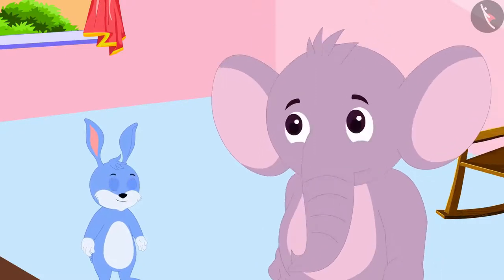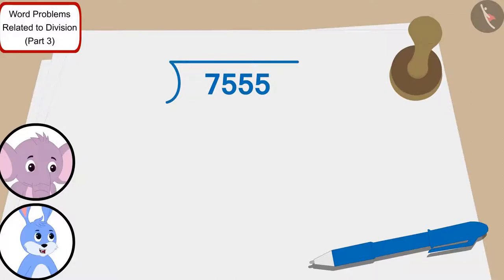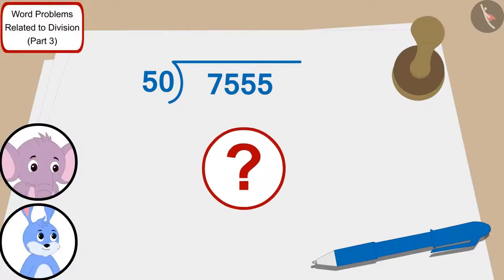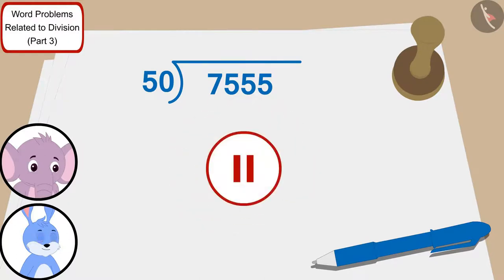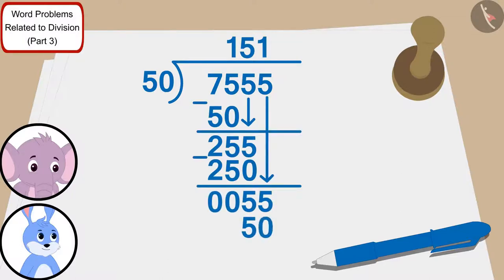"How many villagers will we be able to distribute this reward to?" Appu asked Bunny. "This is very easy — we just have to divide 7555 by 50," Bunny told Appu. Children, can you find the answer using the process of division? If you wish, you can solve it by pausing the video.